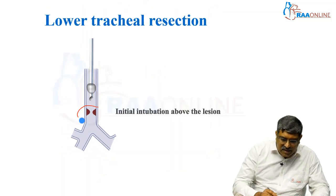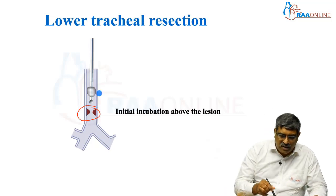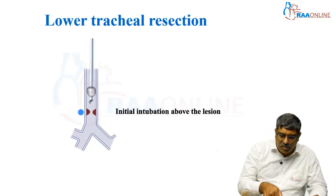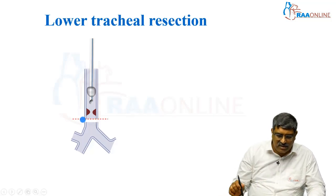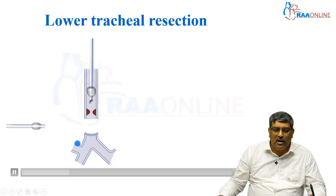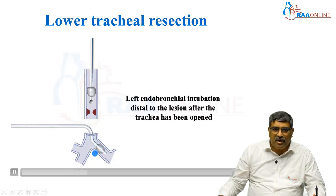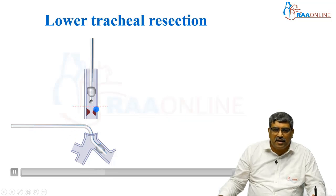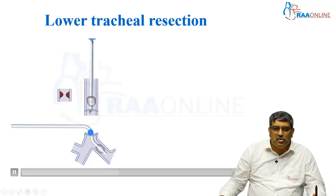Coming to tracheal resection at the lower part of the trachea: you intubate with a single lumen tube above the lesion and ventilate the patient. Resection is done at the lower part, then an endobronchial tube is placed into the left main stem bronchus and ventilation is carried on with this tube. Then the resection of the involved part of the trachea is done and this part is anastomosed again.